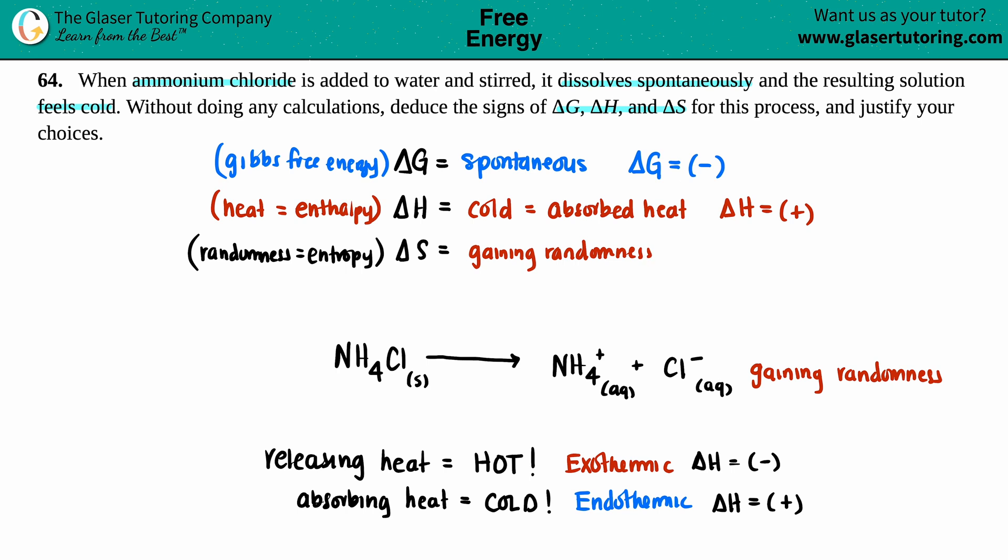And then finally it says justify your choices. Basically, whatever we just went through, that's all the breakdown of why the delta G is negative, the H and the S are both positive, and we are done.